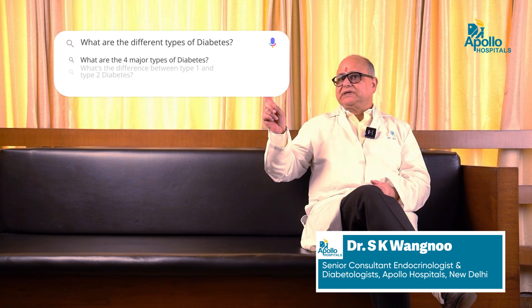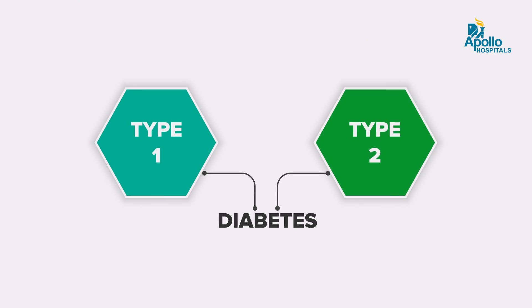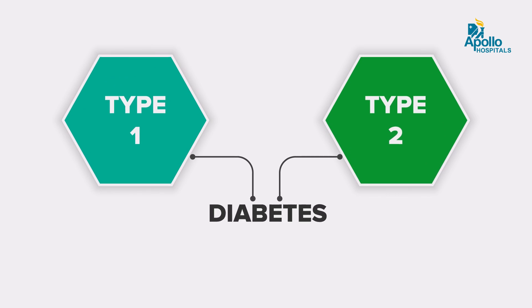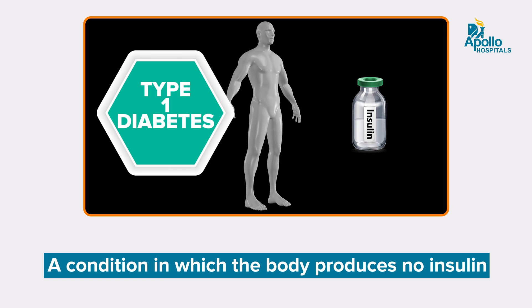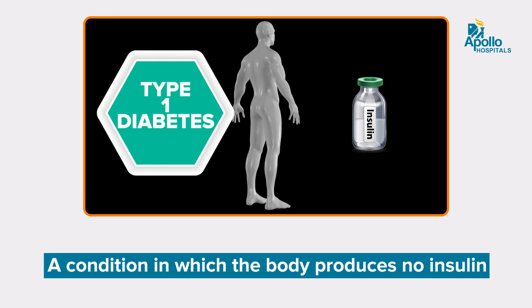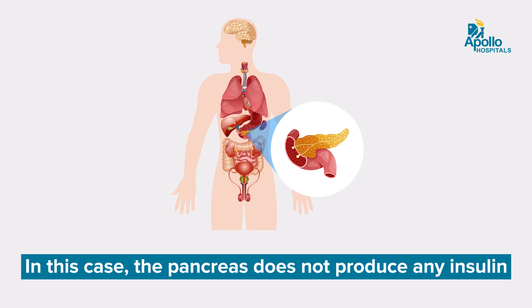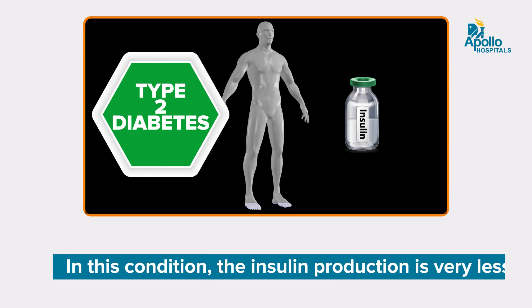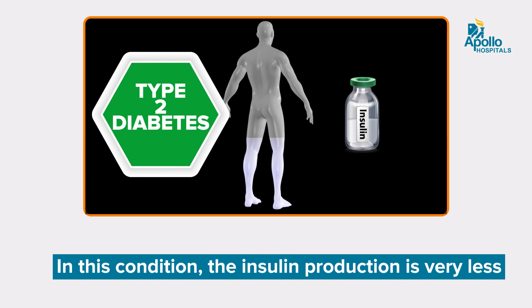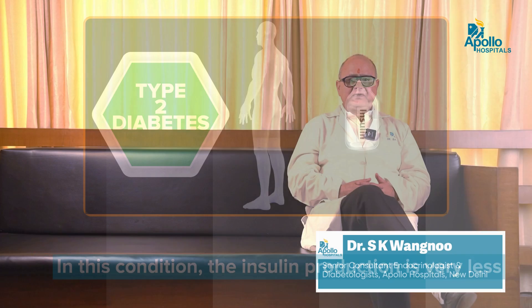What are the different types of diabetes? In simple layman terms, there are two main types of diabetes — Type 1 and Type 2. Type 1 is where the body's insulin production is absolutely nil, meaning the pancreas is not producing insulin at all. While in Type 2 diabetes, the insulin production is less and inadequate, and whatever insulin is being produced is not acting properly — that is called Type 2 diabetes.